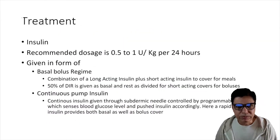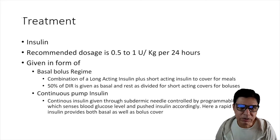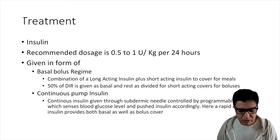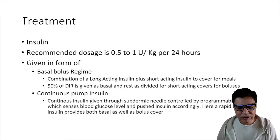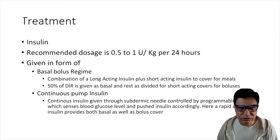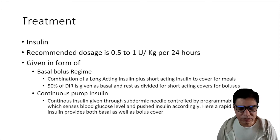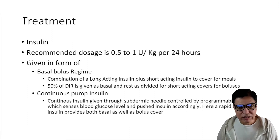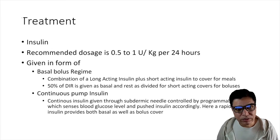Moving on to treatment. For Type 1 diabetes, the treatment is always insulin — there is no other oral drug treatment routinely used. Insulin requirements can differ by age, growth spurts, and individual needs, but are generally 0.5 to 1 unit per kilogram of body weight per 24 hours.